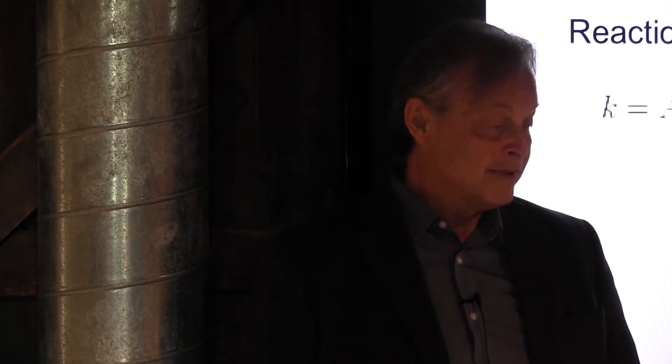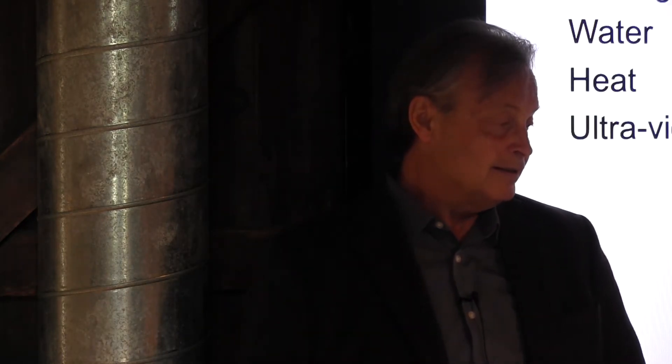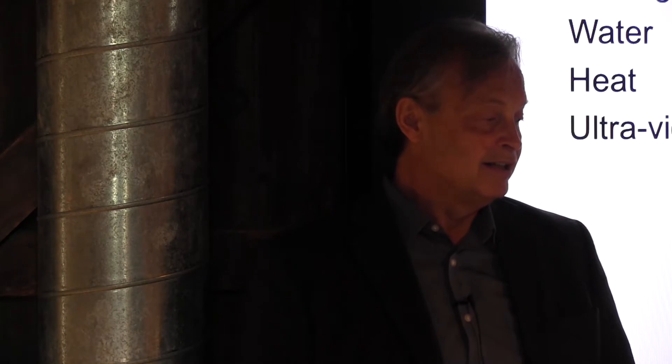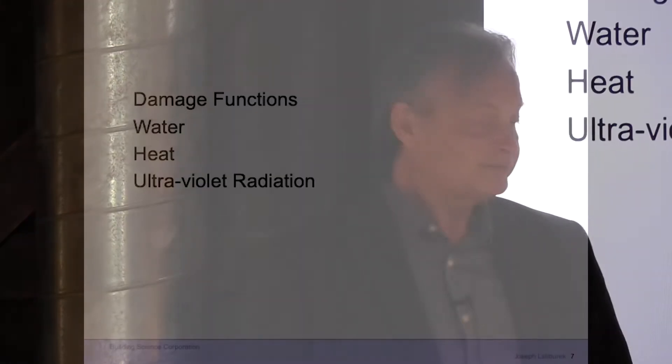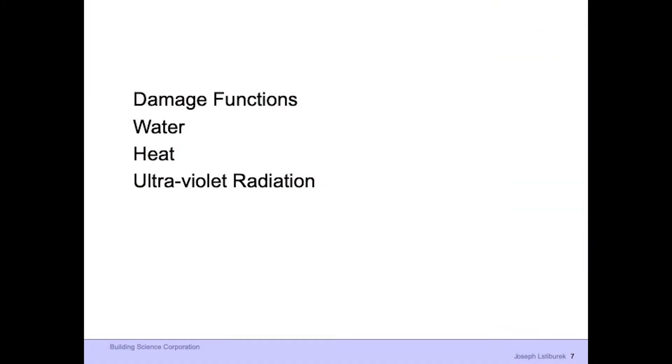This is the Arrhenius equation, and it governs what we call the principal damage functions. There are about 20 damage functions, but these are the most important, in order of importance: water, heat, and ultraviolet light.